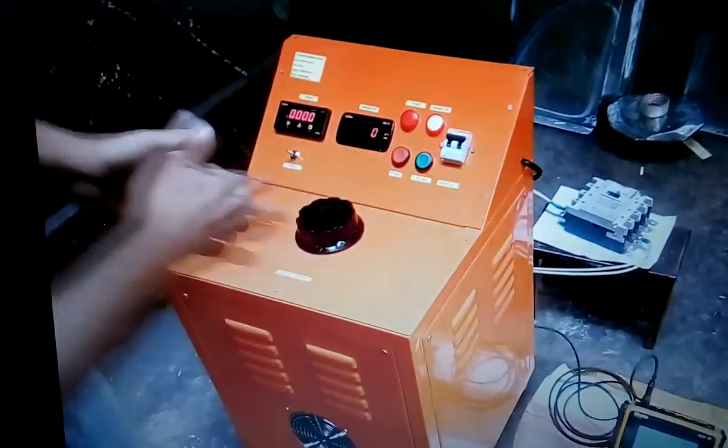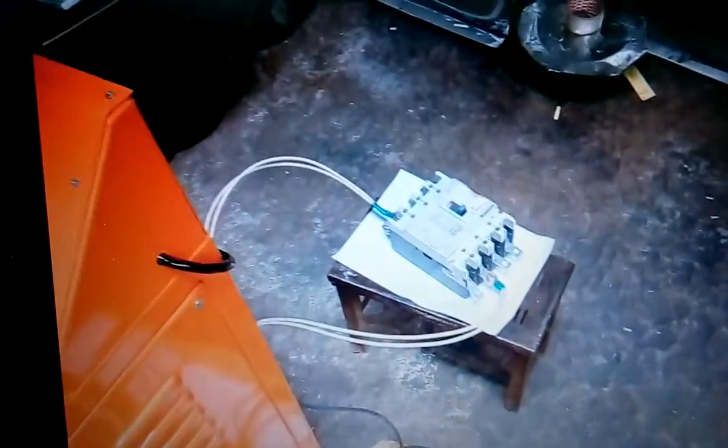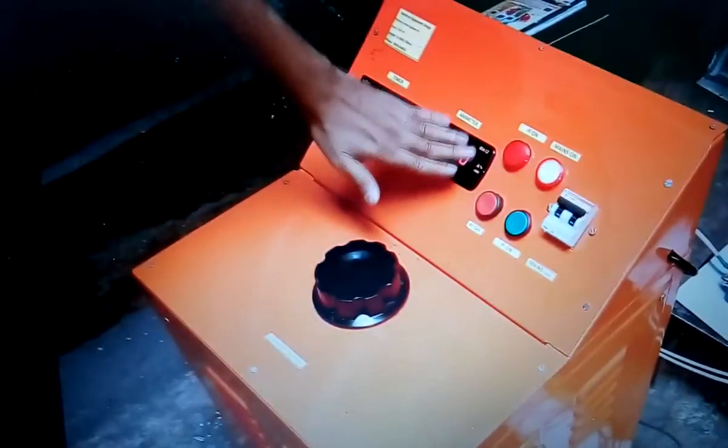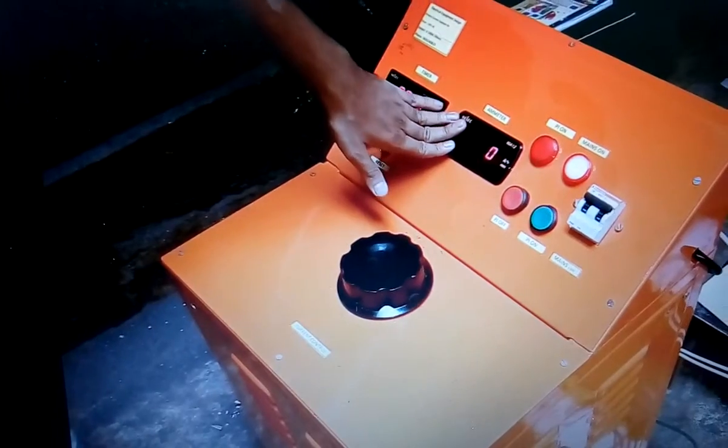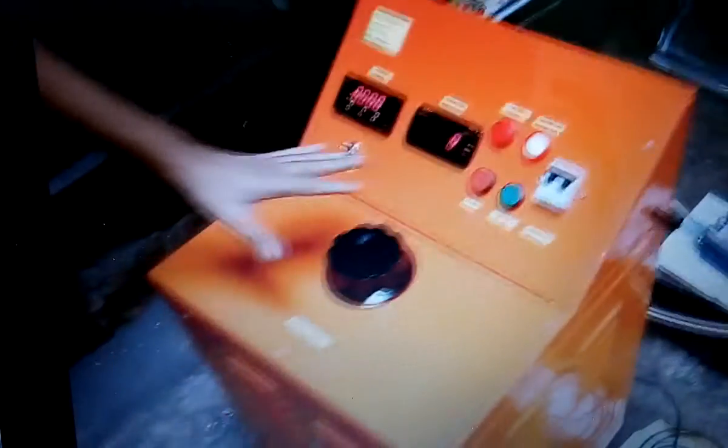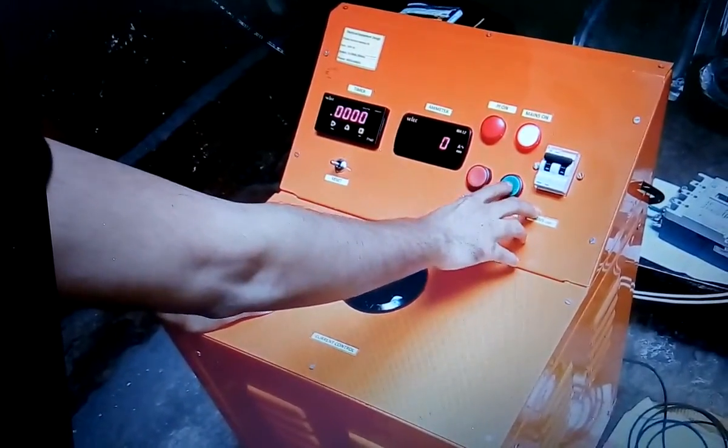You can see now we have done the setup for testing the MCCB tripping characteristics. The MCCB is connected here. Now we are going to inject the current as I said, 350 ampere or above, so 250% of the normal rated current. We will start the procedure and now I am just making it ON.